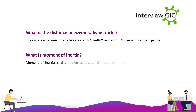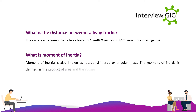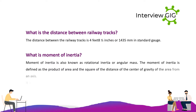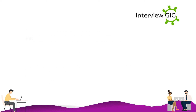What is moment of inertia? Moment of inertia is also known as rotational inertia or angular mass. The moment of inertia is defined as the product of area and the square of the distance of the centre of gravity of the area from an axis. It is denoted by I.